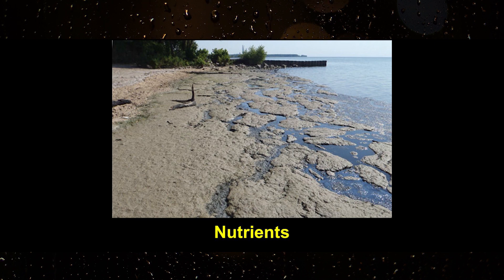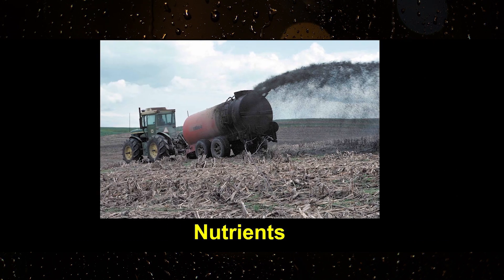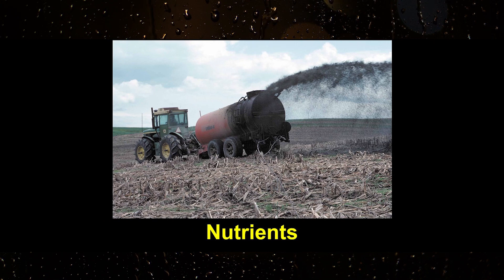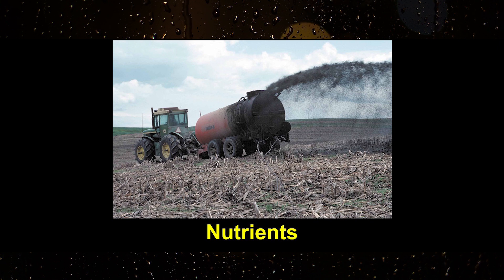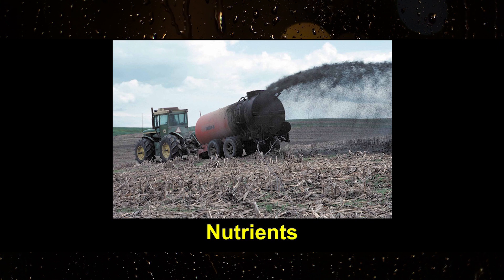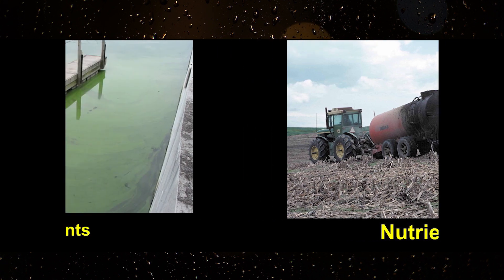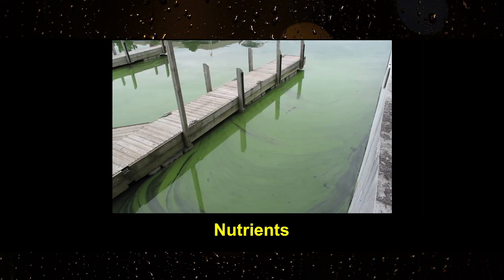Nutrients are a typical pollutant associated with stormwater runoff. The addition of phosphorus to stormwater runoff from landfills, sediments, septic fields, sewage, animal waste, illicit connections, and over fertilization result in algal blooms and excessive plant growth.